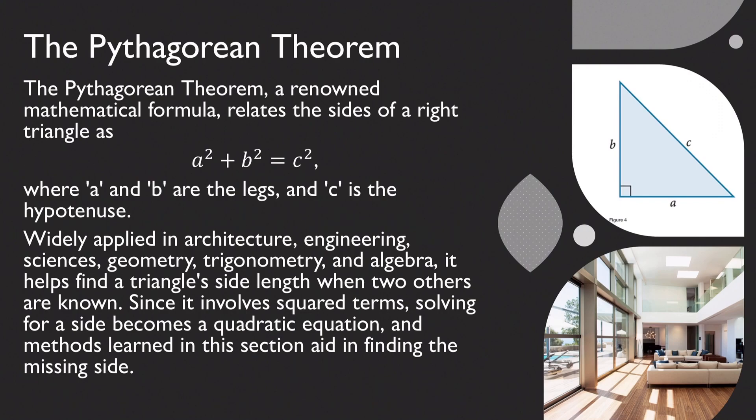The Pythagorean Theorem: a renowned mathematical formula relates the sides of a right triangle as a² plus b² equals c², where a and b are the legs and c is the hypotenuse. Widely applied in architecture, engineering, sciences, geometry, trigonometry, and algebra, it helps find a triangle's side length when two others are known. Since it involves square terms, solving for a side becomes a quadratic equation, and the methods learned in this section help find the missing side.